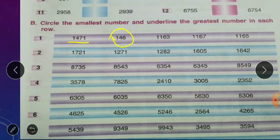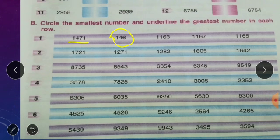Second row: 1721, 1271, 1282, 1605, and 1642. All are 4-digit numbers with 1 in thousands place. Check hundreds place: 7, 2, 2, 6, 6 — the smallest hundreds digit is 2, and between 1271 and 1282, 1271 is smaller, so circle 1271. The greatest hundreds digit is 7, so 1721 is the greatest number — underline 1721.